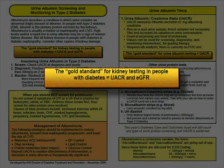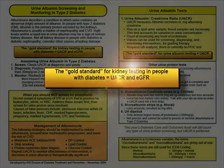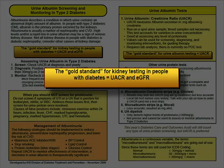One is the urine albumin to creatinine ratio, or UACR. The other is the serum creatinine level with the calculated estimated glomerular filtration rate, or eGFR.